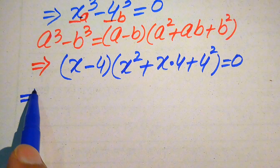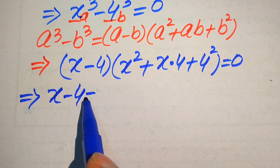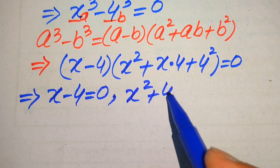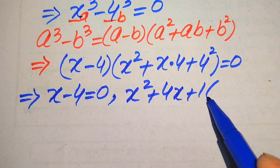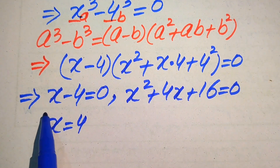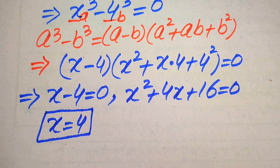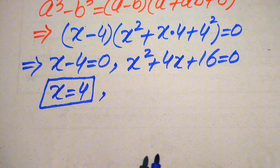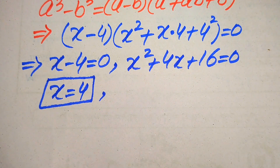We divide this into two cases. The first case is x - 4 = 0, and the second case is x² + 4x + 16 = 0. From the first case we easily get x = 4, which is our first integer value. To find other integer values we need to solve the quadratic equation and check whether it has integer solutions.